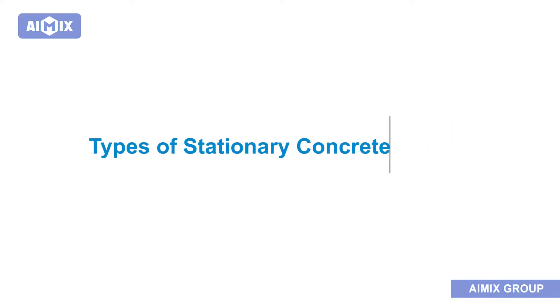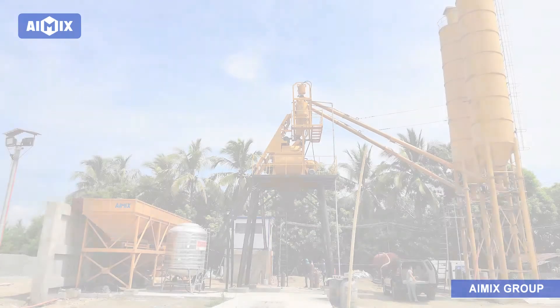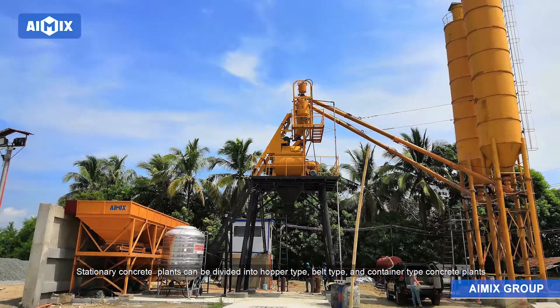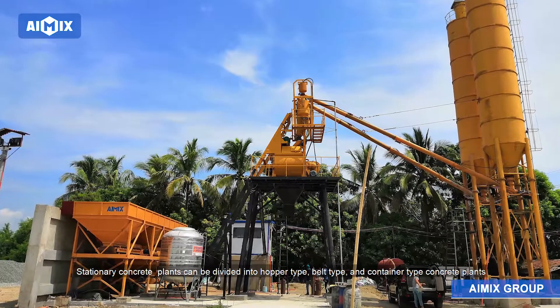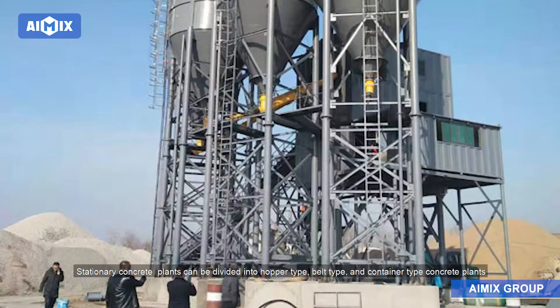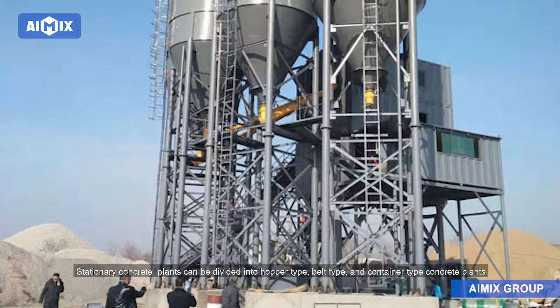Types of stationary concrete plant. Stationary concrete plants can be divided into hopper type, belt type, and container type concrete plants.